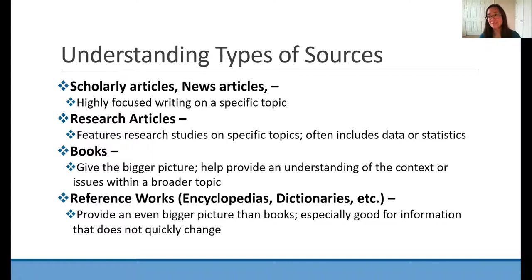Then we have books. Books give the bigger picture — they help provide an understanding or context of the issues within a broader topic, and they're great if you're unfamiliar with your topic and want to get acquainted with it. Then we have reference works like encyclopedias, dictionaries, or atlases. These provide an even bigger picture than books and are great for information that doesn't change quickly, since they're not published very frequently. They often include data and statistics as well.